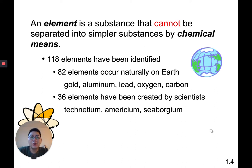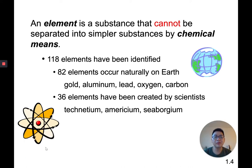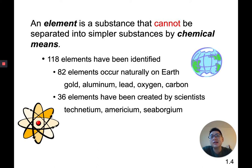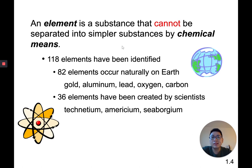An element is something that cannot be separated into a simpler substance by chemical means. There are 118 different elements identified. 82 of them are naturally occurring — like gold, aluminum, lead, oxygen, and carbon. The remaining 36 were created by scientists, like americium or seaborgium — these are man-made elements that you cannot find in nature.